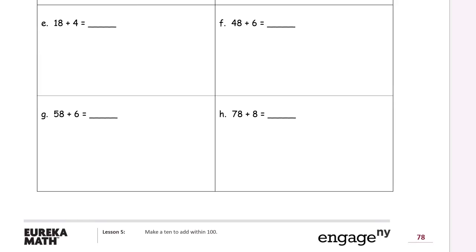If we're looking at eighteen plus four, well, eighteen — you only need two more to get to twenty, right? So that's two, and then four has two left, because two twos makes four. There's your twenty. So it's twenty plus two — twenty-two.